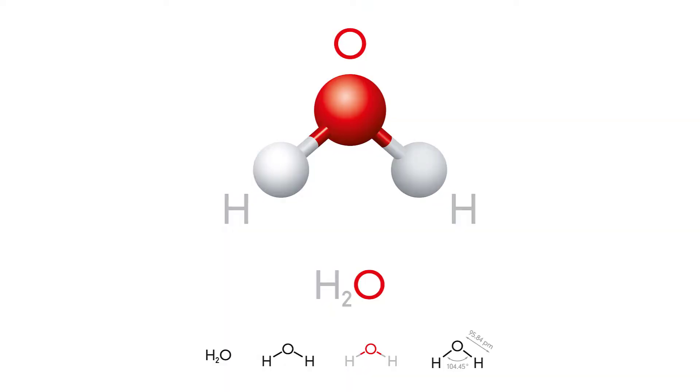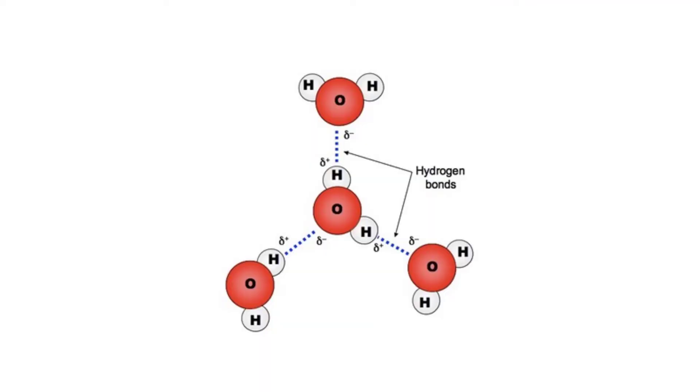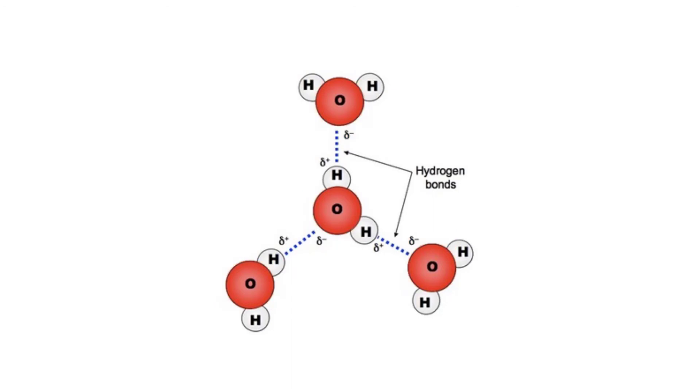The molecular structure of water is such that for each molecule of water there's two hydrogen atoms and one oxygen atom. The hydrogen atoms are associated with a positive electrostatic charge, the oxygen with a negative electrostatic charge. So when you've got lots of molecules interacting with one another, the positive parts and the negatively charged parts of the molecule tend to attract, just like a magnet.